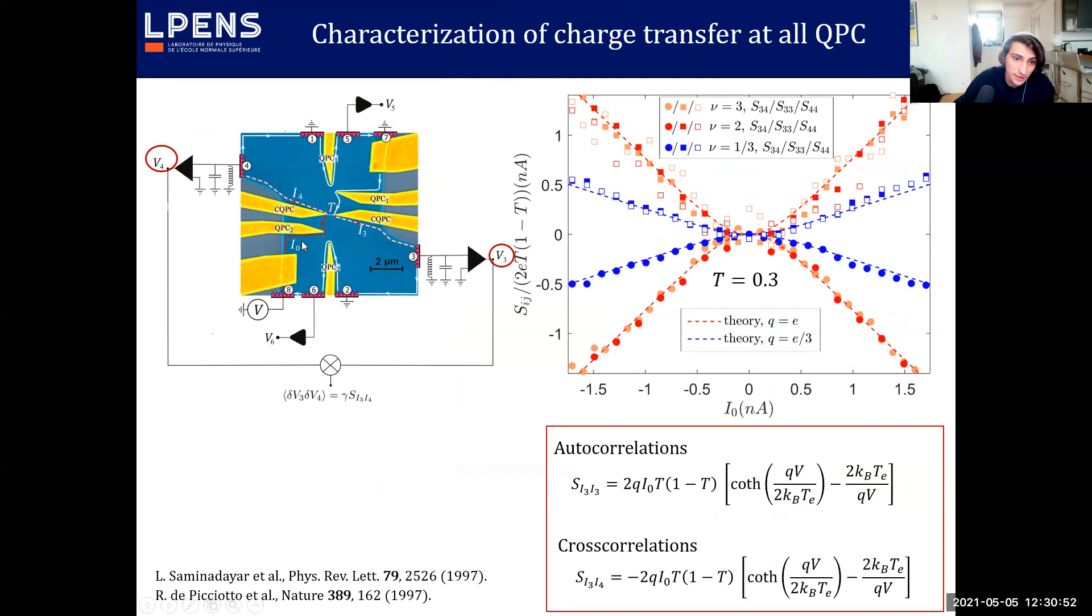For the central QPC, what we do is we still want to have only one partition center so we let the input QPC open and we can send directly a current I_0 to the central QPC but this time we can probe the current situation at both outputs 3 and 4 and measure both auto-correlation 3, auto-correlation 4 and cross-correlation signal. Let's notice that in this single QPC geometry both signal auto-correlation and cross-correlation will be equal up to a sign. This is the result for the central QPC and we see that the positive curves are auto-correlation and the negative are cross-correlation and this fits also nicely with a charge e for ν=2 and ν=3 and a charge one-third in the weak backscattering regime for ν=1/3.